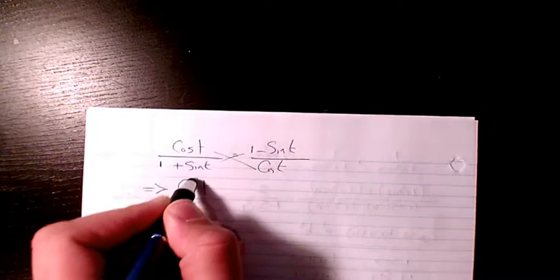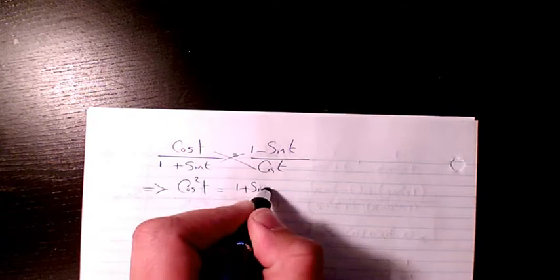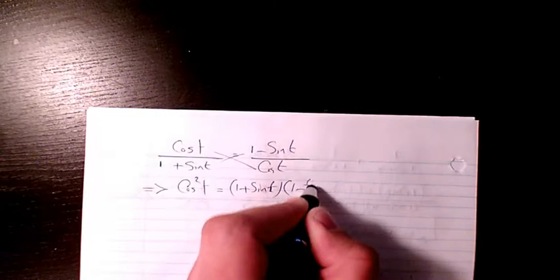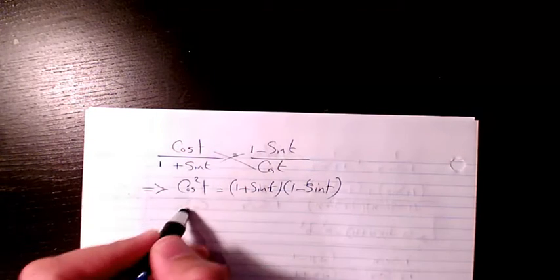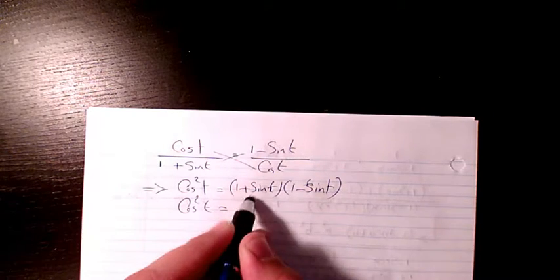So cosine t times cosine t is going to be cosine squared t, and on the other side we have 1 plus sine t times 1 minus sine t. So cosine squared t will be equal to 1 plus sine t times 1 minus sine t.